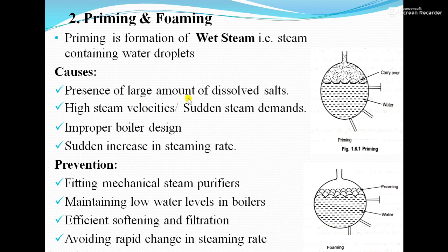Prevention of priming: the presence of large amounts of dissolved salts can be prevented by fitting a mechanical steam purifier and by efficient softening and filtration. High water levels in the boiler can be reduced by maintaining a low water level. Sudden increase in steaming rate can be prevented by avoiding rapid changes in the steaming rate.